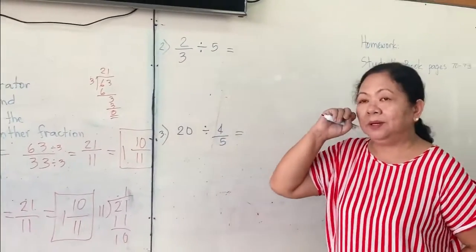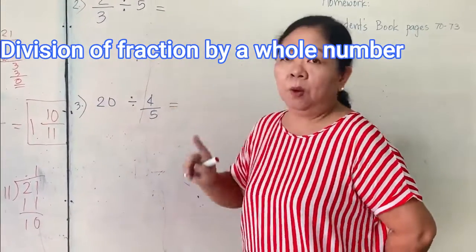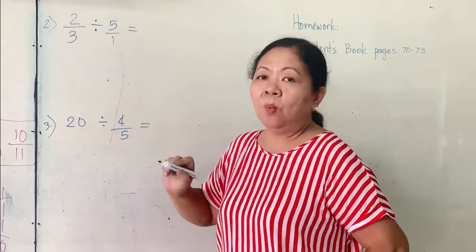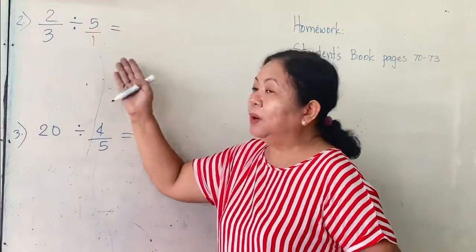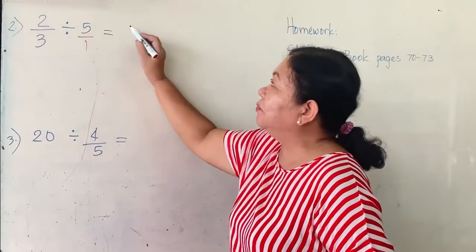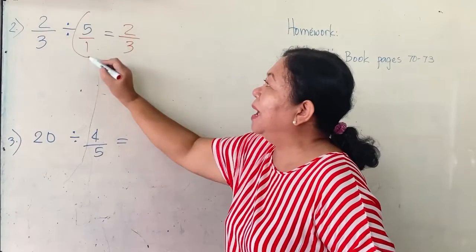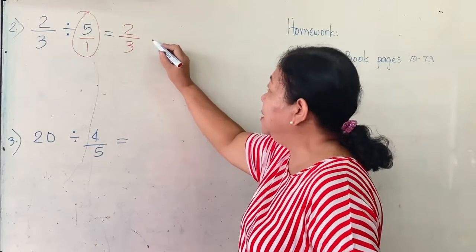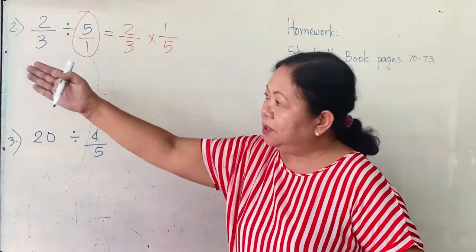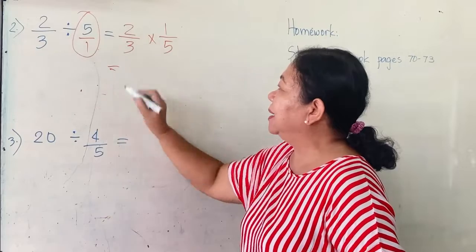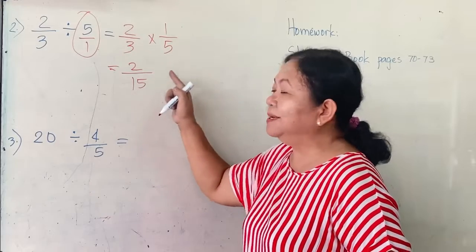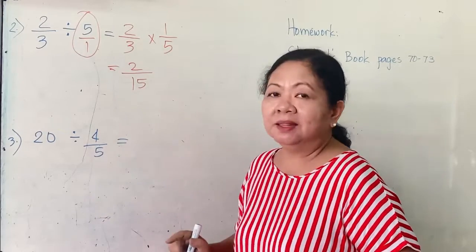Now, here is another example — this is division of a fraction by a whole number. When you see that there is no denominator, understand there is one. We do not write it because five over one is just the same as five. We will divide this — write the first fraction as it is: two over three. But get the reciprocal of the second fraction and change division to multiplication. This is now one over five. Two times one is two, and three times five is fifteen. No more number can divide these two numbers exactly, so this is already in the simplest form — two over fifteen.